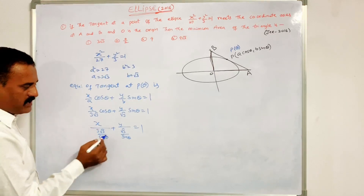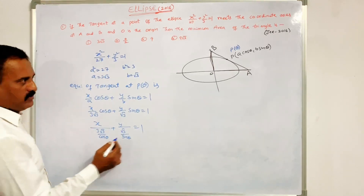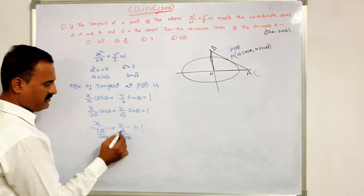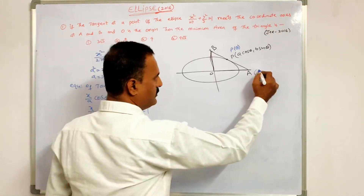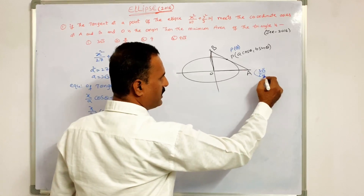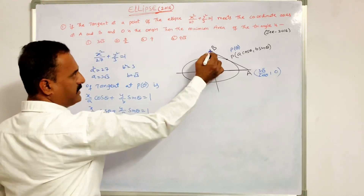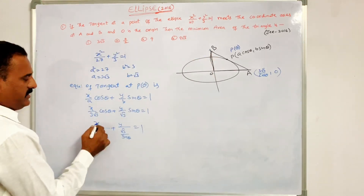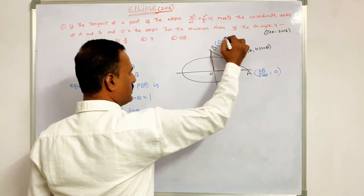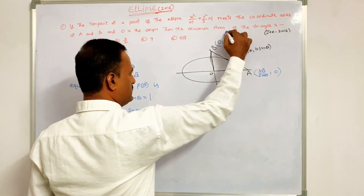This is in the form x/A + y/B = 1. Therefore the coordinates of A: putting y = 0, x = 3√3/cosθ, giving point (3√3/cosθ, 0). And the point on the y-axis: putting x = 0, we get B = (0, √3/sinθ).